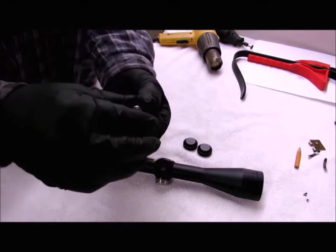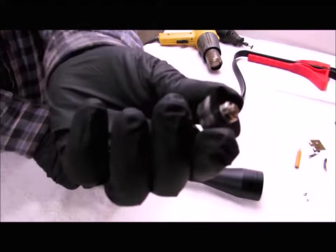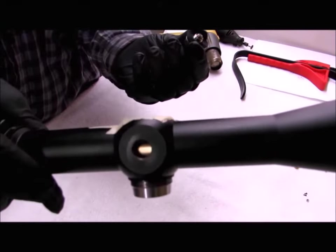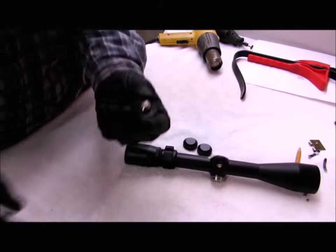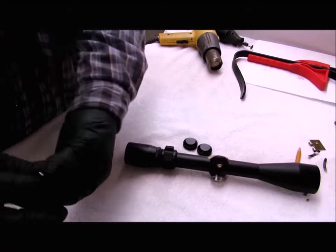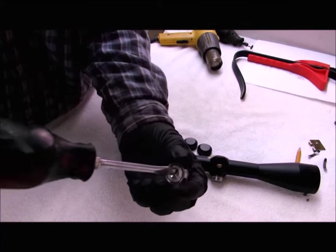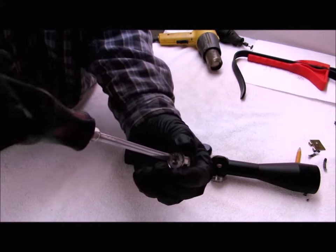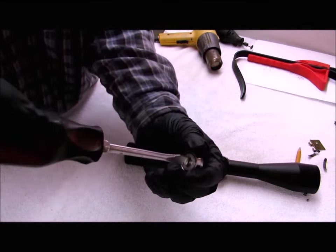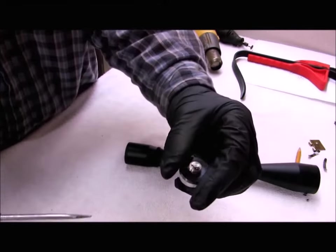It's just threaded into the scope tube. It's a pretty simple mechanism. You have a little detent pin in this one with a spring. Keeps it in position. It's just a threaded post.